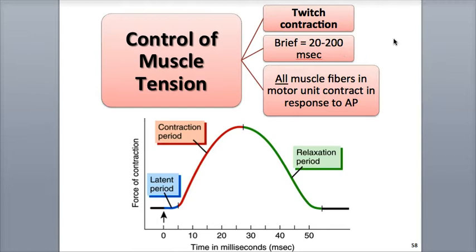Twitch contractions can be demonstrated in the lab by electrically stimulating a motor neuron or the muscle fibers themselves within the motor unit. They can also be shown visually in a graph, like you see here, called a myogram, which plots the muscle's force of contraction along the y-axis against the time in milliseconds along the x-axis.